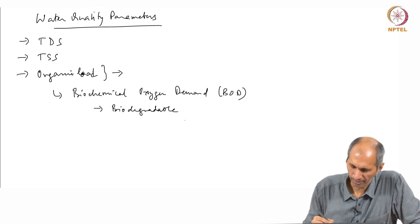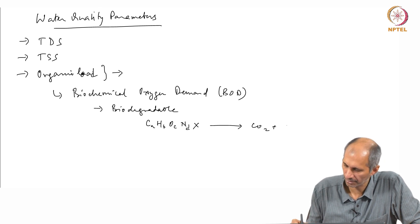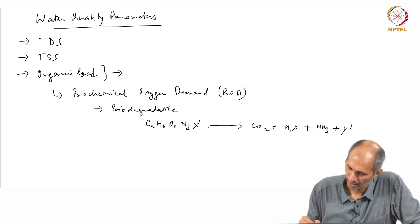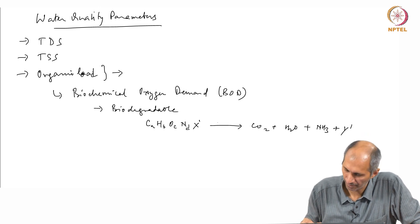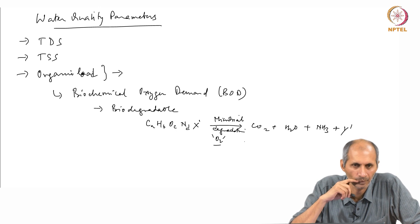If the organic matter is biodegradable, we can represent organic compounds with a formula CₐHᵦOcNd plus X, and these will become CO₂ + H₂O + ammonia or NO₂ and other things. This transformation — this oxidation — happens in the presence of microbial degradation, and some oxygen is consumed in the process.